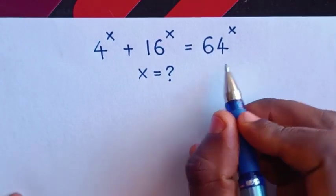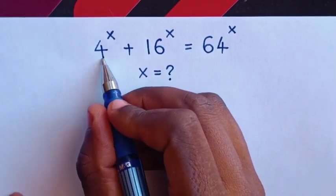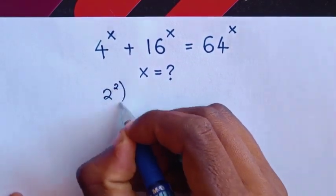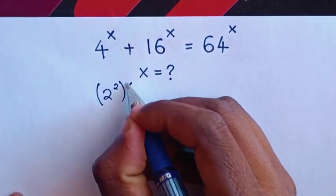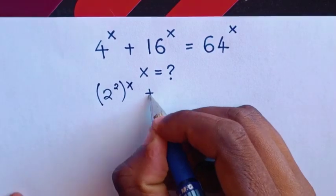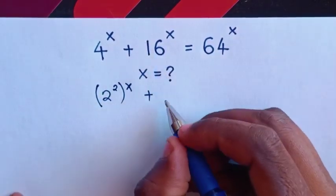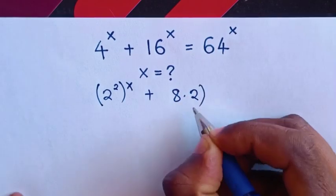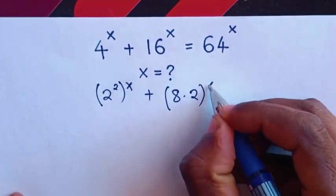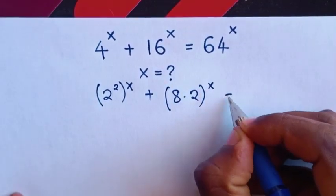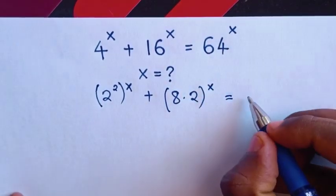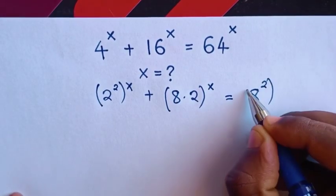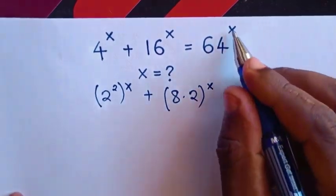First, from this equation, 4 is the same as 2^2, so we write (2^2)^x. Then 16 is the same as 8 times 2, written as (8×2)^x. And 64 is the same as 8^2, written as (8^2)^x.